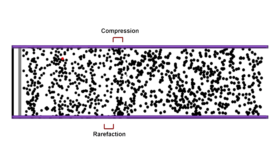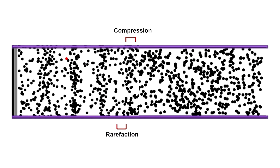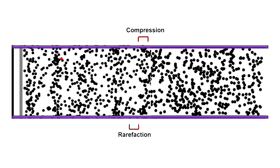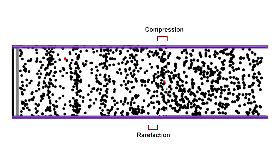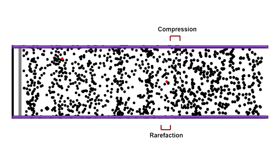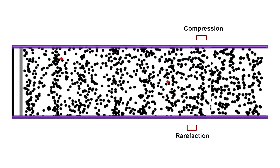As the surface on the left moves in, the nearest molecules are compressed. When it moves back, the compression area becomes rarefied. The compression, followed by a rarefaction cycle, moves to the right.